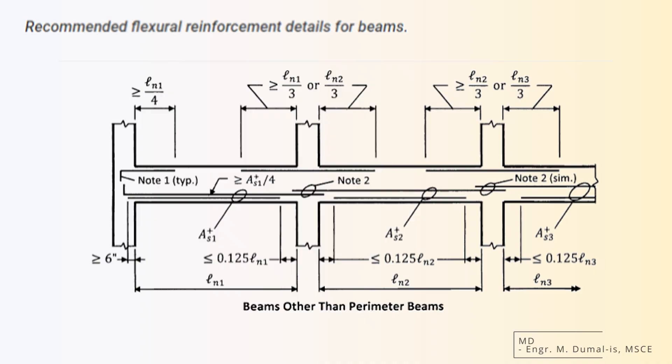You'll also see extra top bars added in the mid-span area. These are for shrinkage and temperature control, and they're spaced based on the span length, not more than 0.125 times the span. Lastly, bars near the supports must extend at least Ln over 4 or Ln over 3 into the adjacent span, depending on whether it's an end or interior span. All of this is about one thing: making sure that the bars are either properly developed or safely spliced, so the beam performs as expected under load.